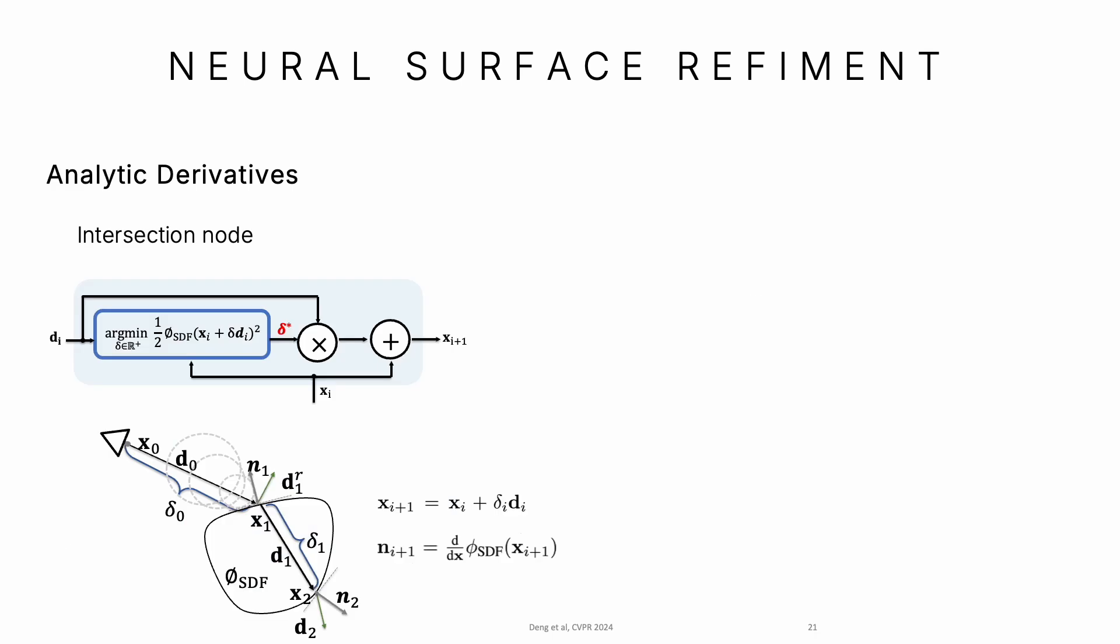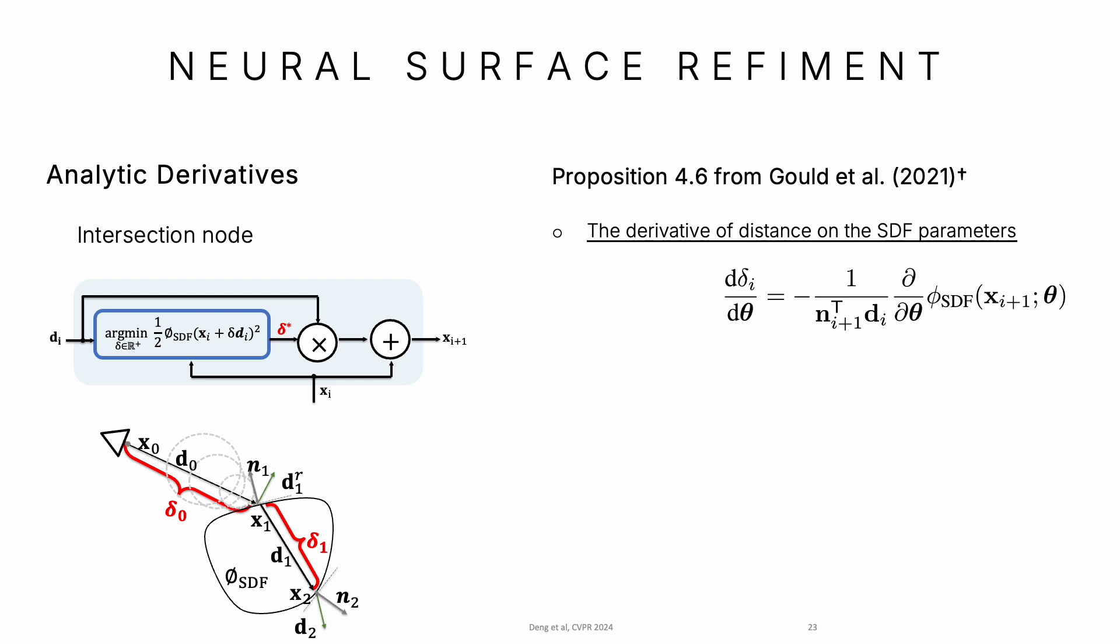Now let's take a close look at analytic derivatives. We leverage Proposition 4.6 from declarative networks. Our derivatives have three parts.